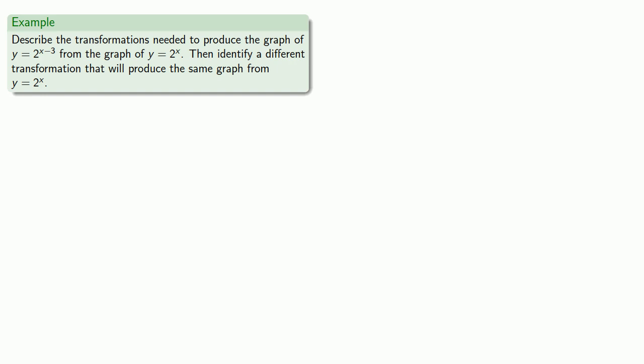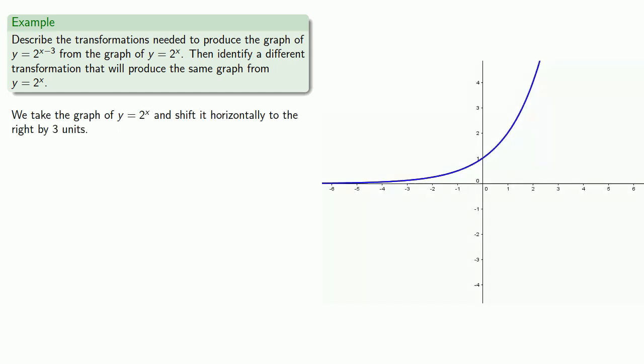Let's try to describe the transformations needed to produce the graph of y equals 2 to the power x minus 3, from the graph of y equals 2 to the x, and then identify a different transformation that will produce the same graph from y equals 2 to the power x. Since this is the graph of 2 to the power x minus 3, we take the graph of y equals 2 to the x and shift it horizontally to the right by 3 units.